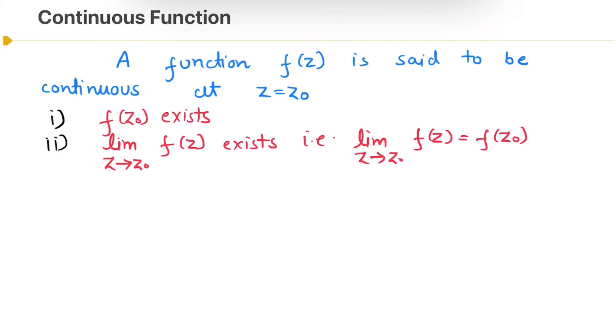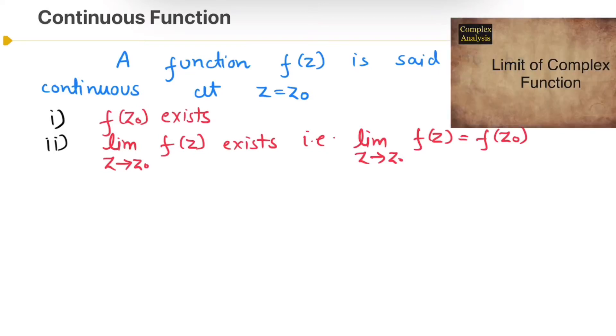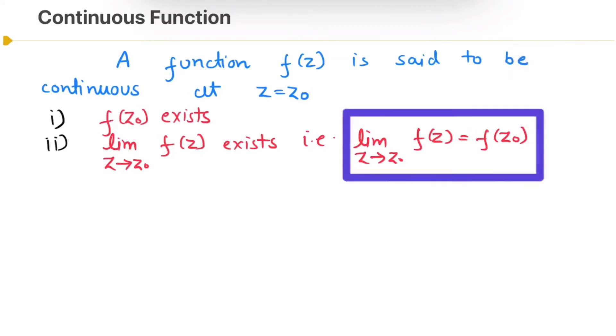And if you remember in the previous video we discussed the limit of a function, so from the second condition using definition of limit we can form the epsilon-delta definition for the continuity of f(z) at z = z₀.